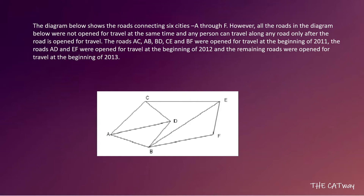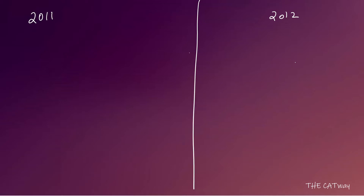The roads AD and EF were open for travel at the beginning of 2012, and the remaining roads were open at the beginning of 2013. So the full road structure is available in 2013. What we need to do is build the road maps for 2011 and then add roads for 2012.